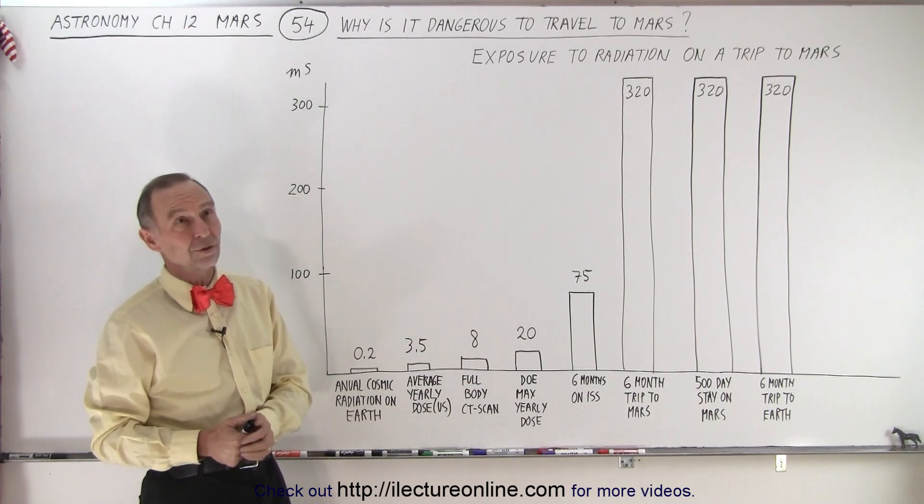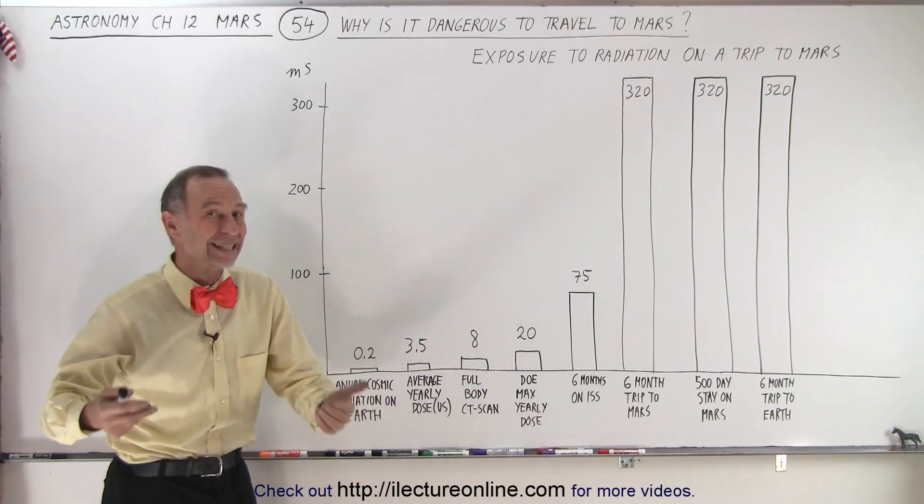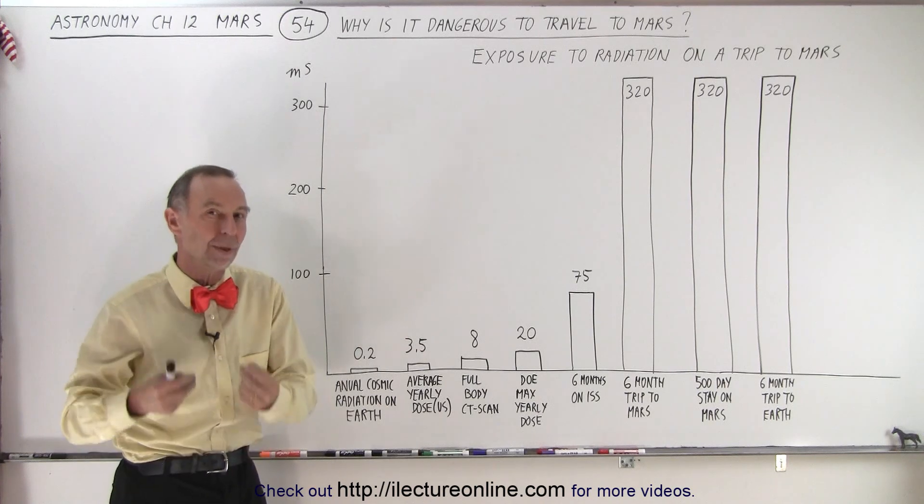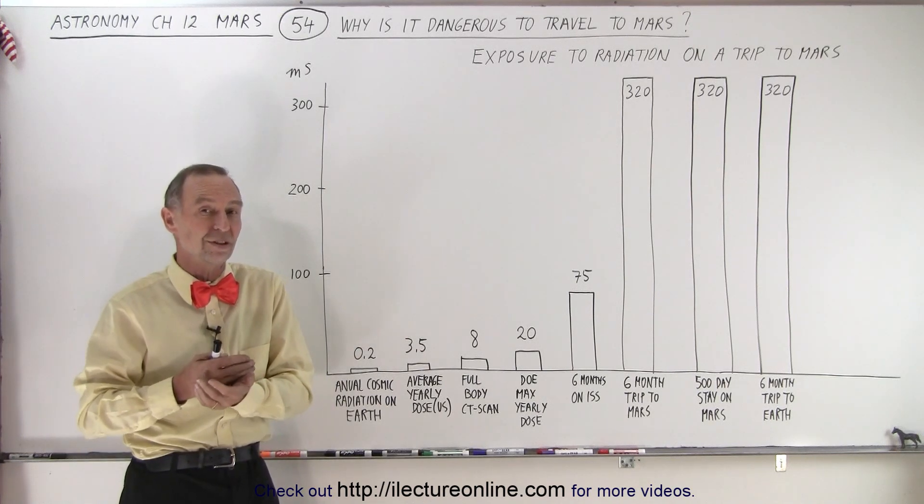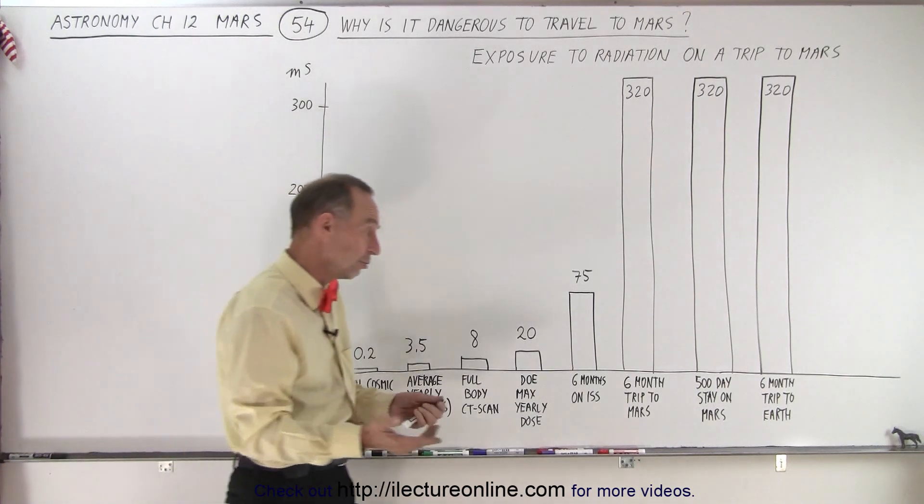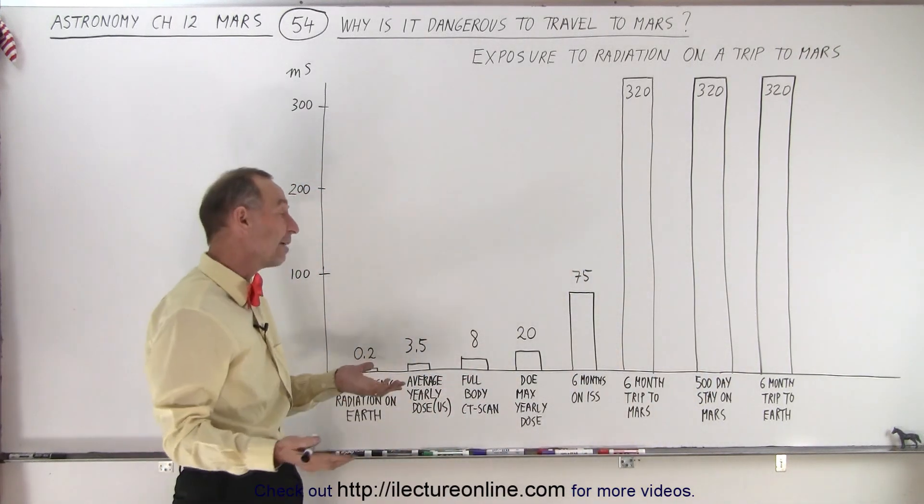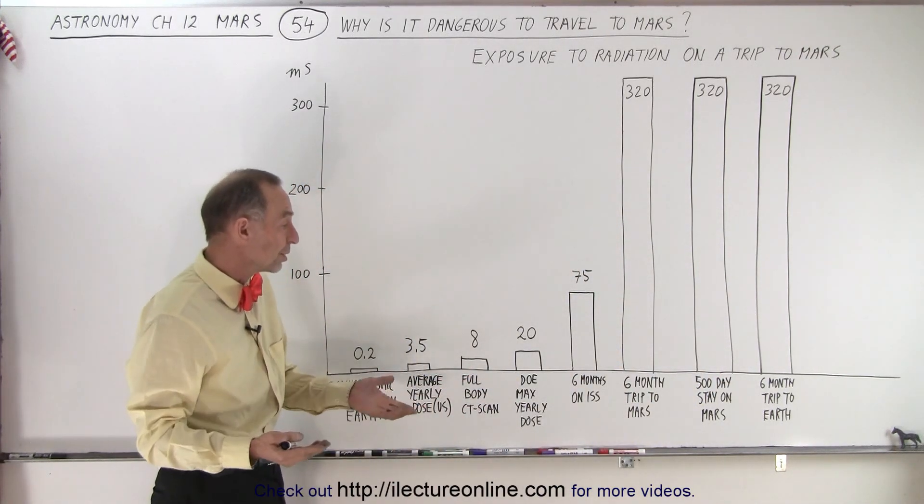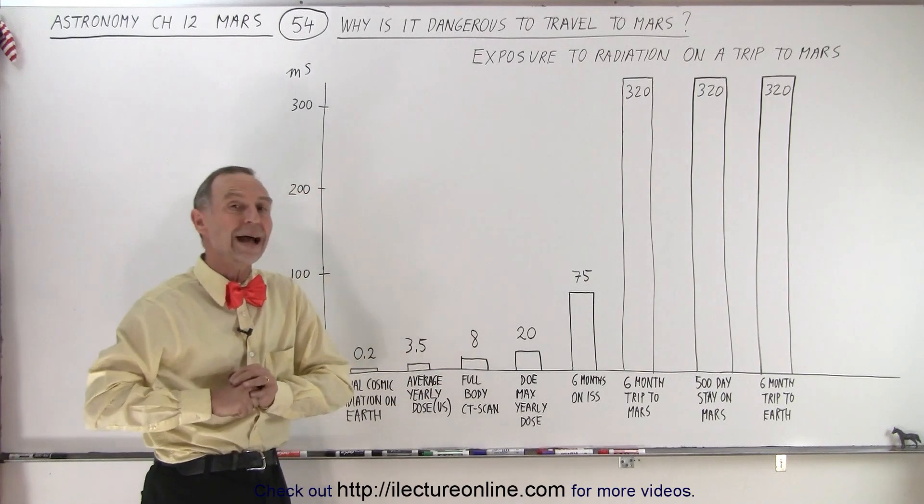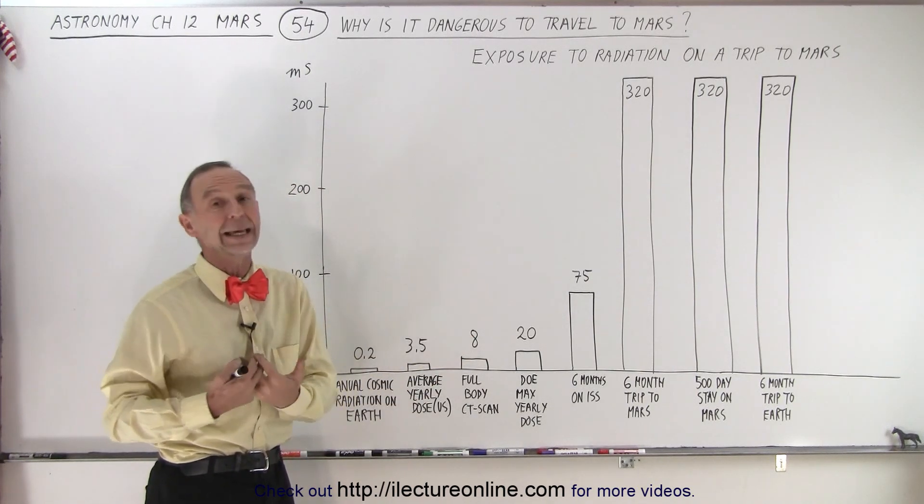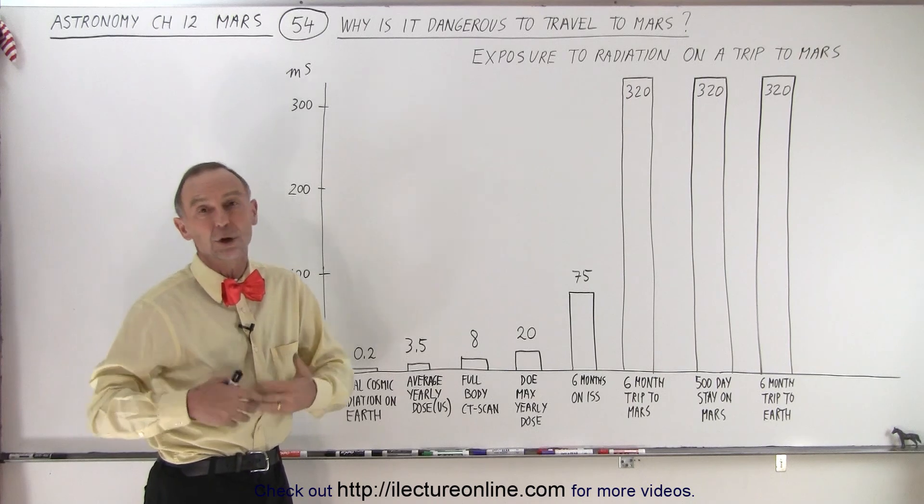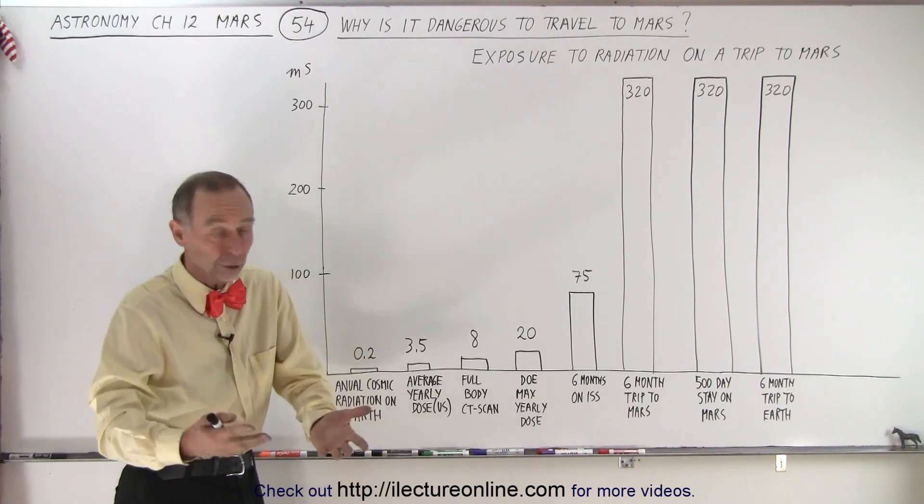That is about 20 goes into 1,000, that's 50 times the maximum allowable radiation a person should receive in any one year. Of course, a trip to Mars like this would take about two and a half years. So two and a half years, that's about 400 per year, that would be about 20 times the maximum allowed by any employee working in a nuclear power plant or around the nuclear power plant.